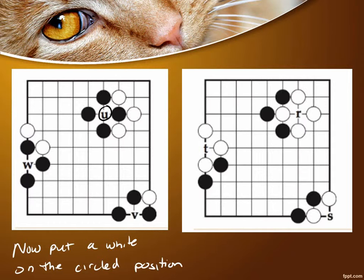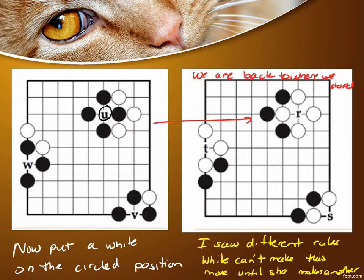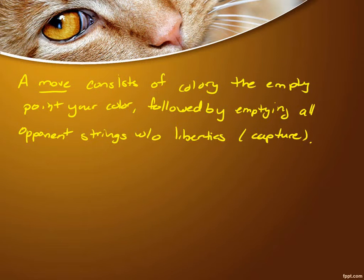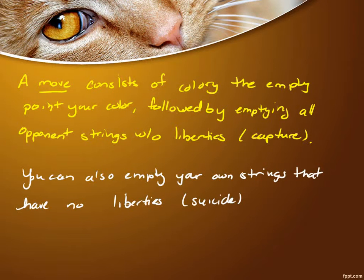So if it was flipped the other way, it would be the same thing. As you were playing, I wasn't able to look at your screens. It's possible you were in one of these positions where it would be a back and forth — and that's not allowed. I saw a different version of this rule: in one version it's not allowed at all, which I think is the computer game you were playing. But in another version, white couldn't make the move until she made a different move first — so she can go back two moves later, but not right away. A move consists of coloring an empty point your color, followed by emptying all opponent strings without liberties — that's capturing. You can also empty your own strings that have no liberties; it's called suicide.